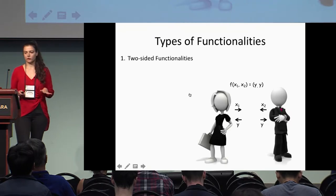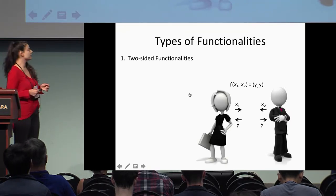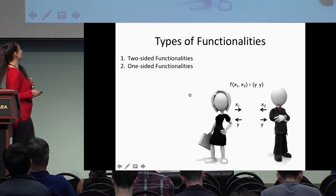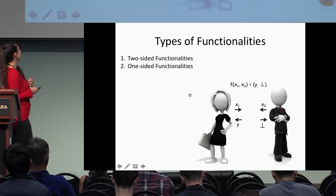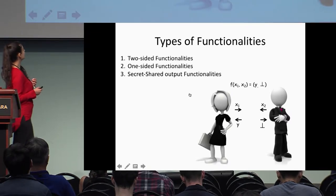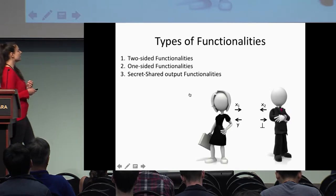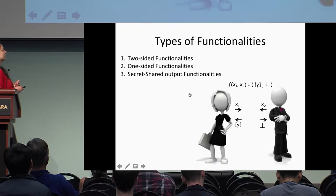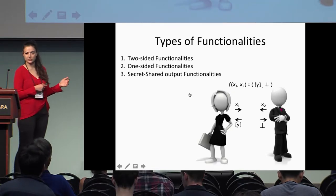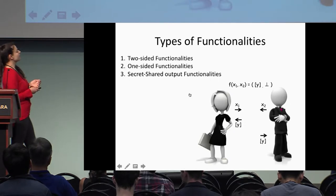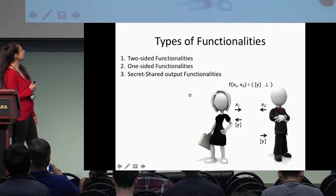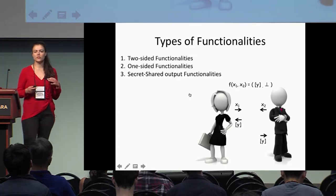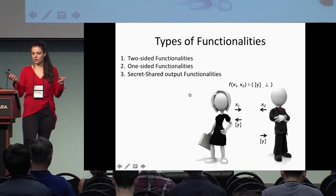We consider three types of functionalities: two-sided functionalities where both parties receive the output; one-sided functionalities where only one party receives the output; and secret-shared output functionalities, where one party receives the output in a secret-shared form and can send it to the other party. This last type is very useful when composing many MPC protocols — like putting an MPC protocol inside a larger MPC protocol.